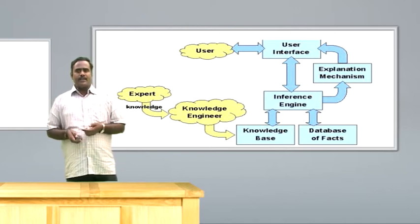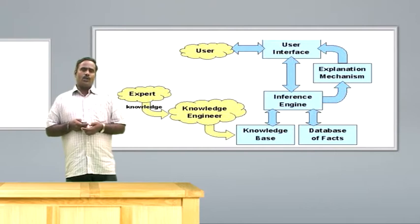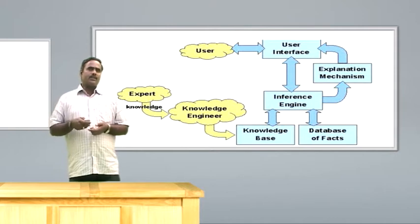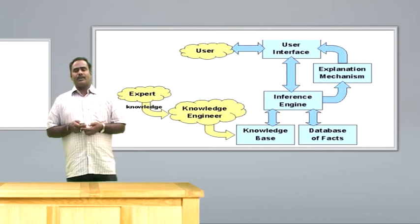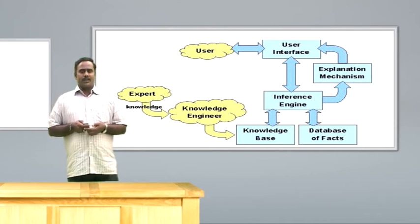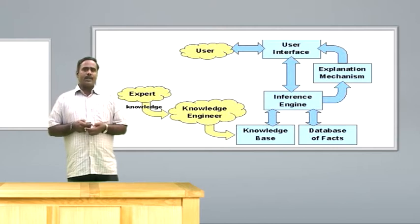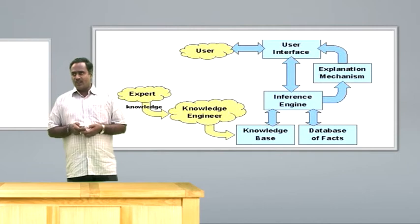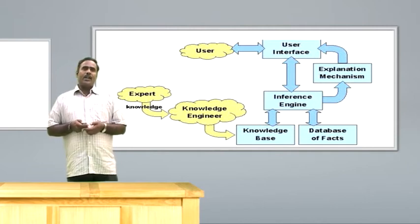The second component is the explanation mechanism, otherwise called the justifier. How the appropriate solution or queries will be picked from the inference engine for the benefit of the user — that process is taken care of by the explanation mechanism. It processes the user interface and the knowledge base and, based on user queries, picks up and gives the best possible solution to the users. That is the inference engine, otherwise called the heart of the expert system.